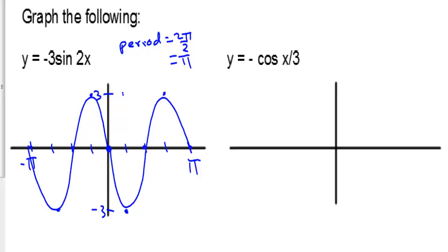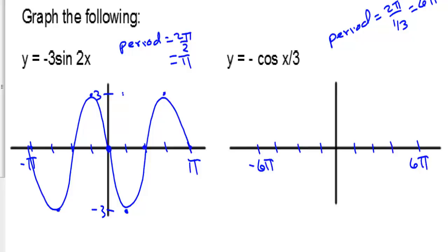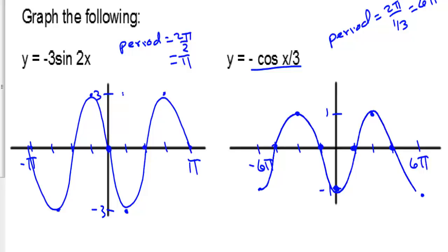y equals negative cosine of x over 3. Let's get the period first. The period is 2 pi over one-third, so 6 pi. This is now 6 pi instead of 2 pi, and this is negative 6 pi. It's going to be negative cosine, so we reflect over the x-axis. The amplitude is still 1. Normally cosine starts at 1, so now we start at negative 1: negative 1, 0, 1, 0, negative 1. Going the other direction: 0, 1, 0, and negative 1. There are two periods of our graph.